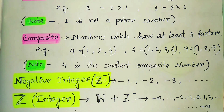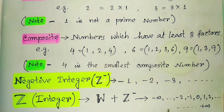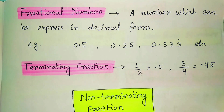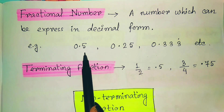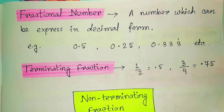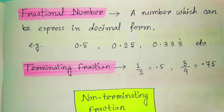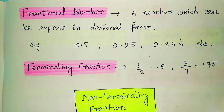The integer set Z consists of all numbers from minus infinity to plus infinity, but remember all these are whole numbers. There is also the concept of fractions, which lie within this number system. Fractional numbers are numbers which can be expressed in decimal form — like 0.5, 0.25, or any number requiring a decimal point.